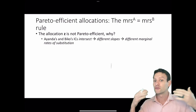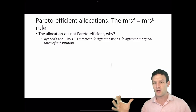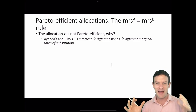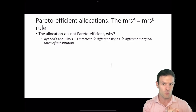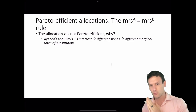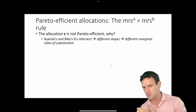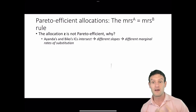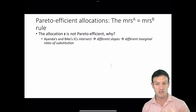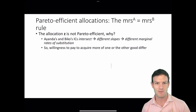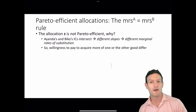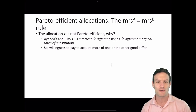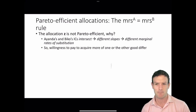When their willingness to pay are equal, there are no alternative points where they could do better — no point where the marginal rate of substitution of one equals that of the other, or where A's willingness to pay equals B's willingness to pay. Willingness to pay to acquire units of one good or the other could differ at point Z.